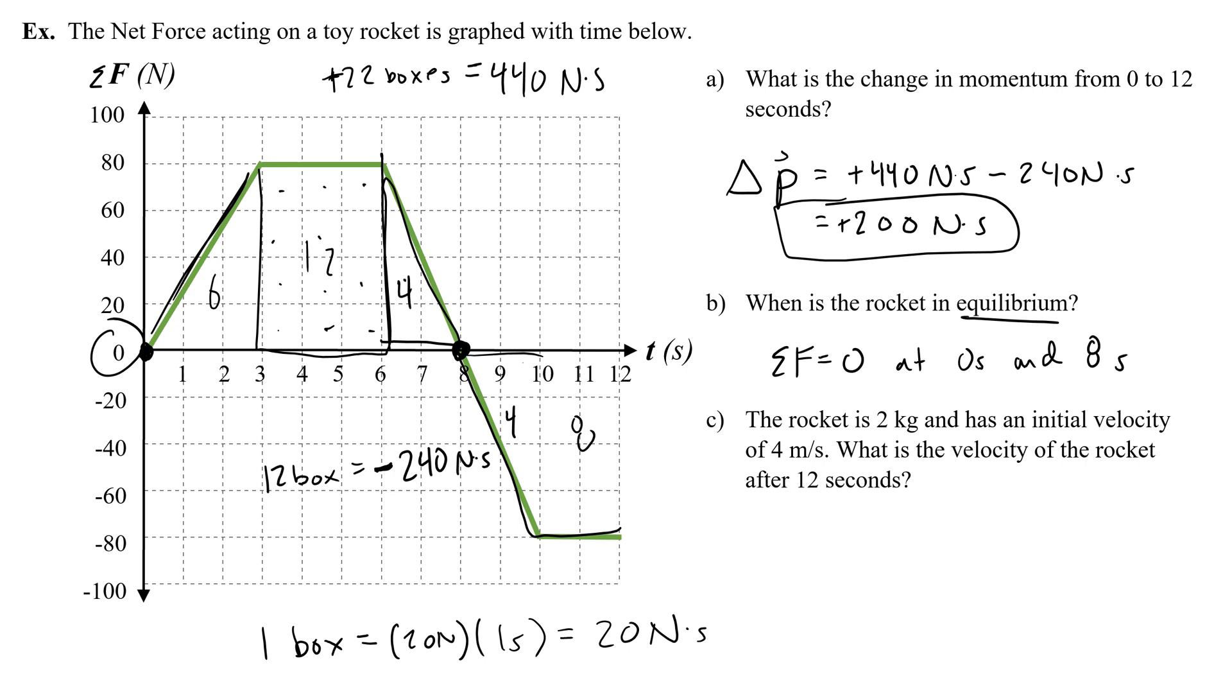Part C: The rocket is 2 kilograms and has an initial velocity of 4 meters per second. What is the velocity of the rocket after 12 seconds? They're telling us that the mass is 2 kilograms, the initial velocity is 4 meters a second, and there is an amount of time, 12 seconds. So the 12 seconds is saying, okay, you found the change in momentum from 0 to 12 seconds. You know that that's 200 newton seconds. Use that to calculate the final velocity. The change of momentum, delta p, is really the momentum in the beginning minus the momentum at the end. I could write that m delta v or mv minus mv0. And I know delta p, I know m and v0, and I want to find v.